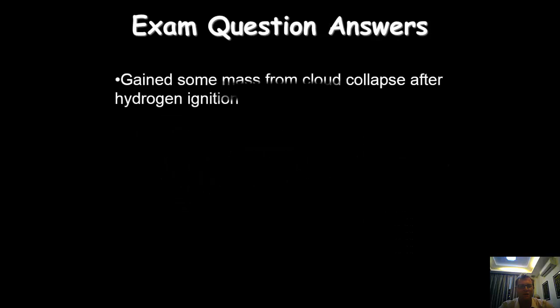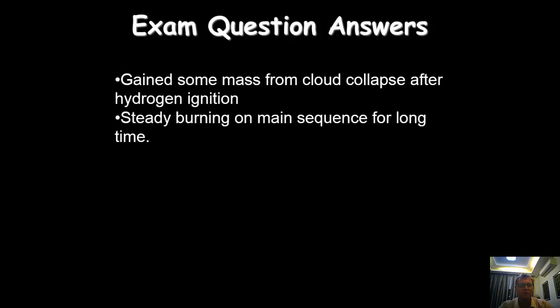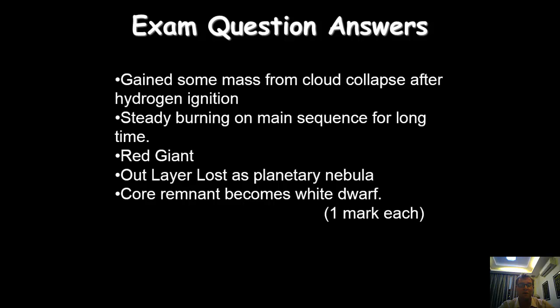The answer would be, it gains some mass from the cloud collapse after the hydrogen ignition. So just as the star formed, there may have been a little bit more mass falling onto it. It stays on the main sequence for a long time. As we mentioned at the beginning, this is going to be probably about 10 billion years. Then it forms a red giant. With a red giant, the outer layer is lost as a planetary nebula, leaving the core remnant behind, and then it becomes a white dwarf. So that would be the story of a star much like ours.